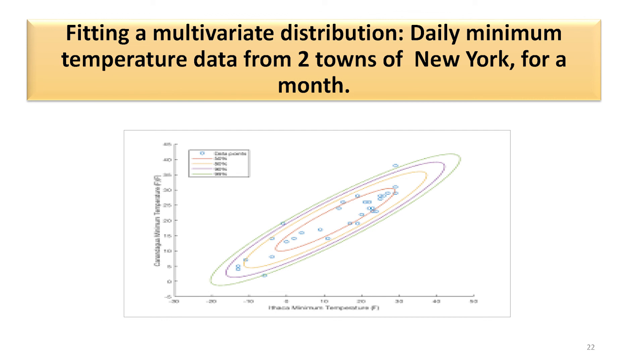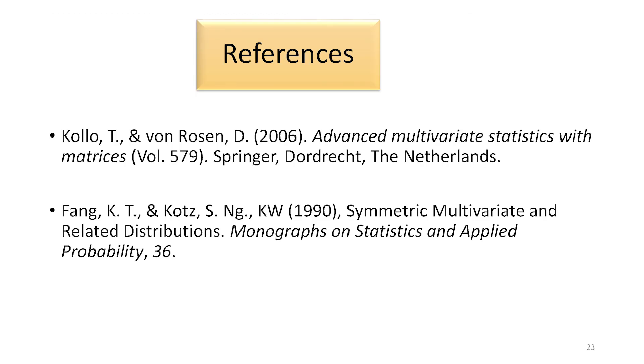A study was considered on daily minimum temperature for two towns in New York. The data was collected for a month and an attempt was made to fit a multivariate distribution. The plot showed an elliptical shape, which indicates that an elliptical distribution will be suitable for this purpose. These are two of the references which talk about spherical and elliptical distributions. We have seen that the spherical distribution generalizes the multivariate uncorrelated normal and t distributions which we are very familiar with.